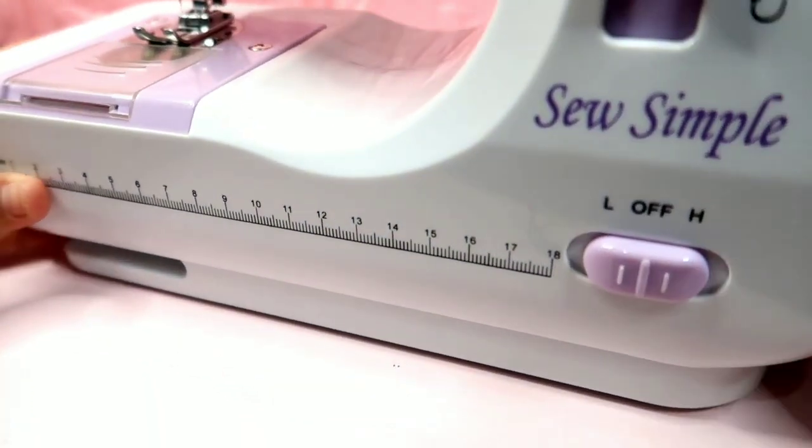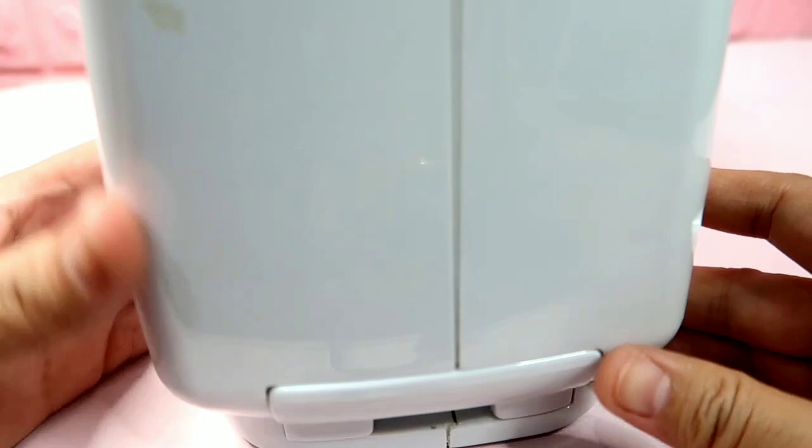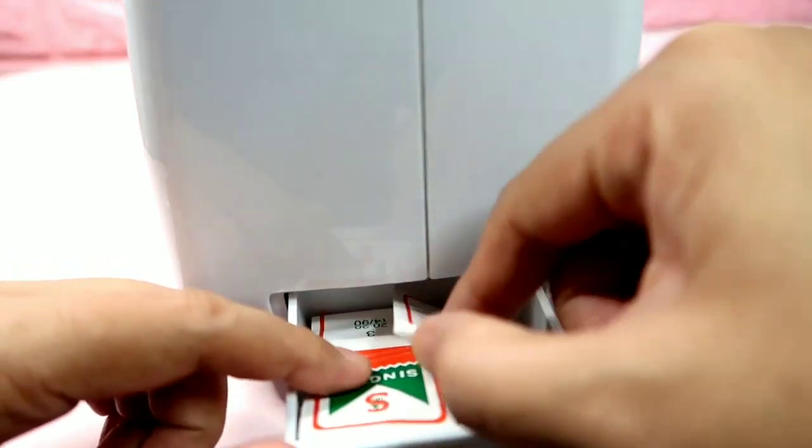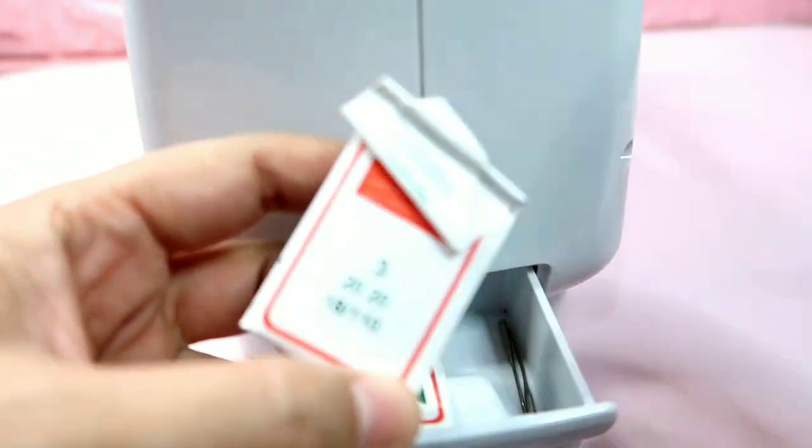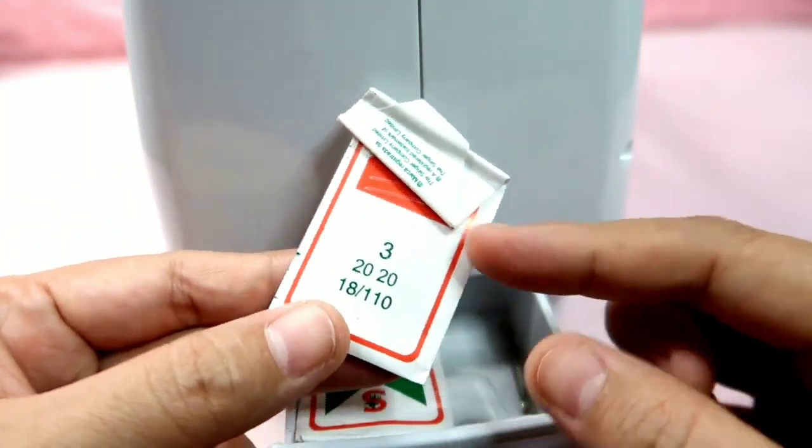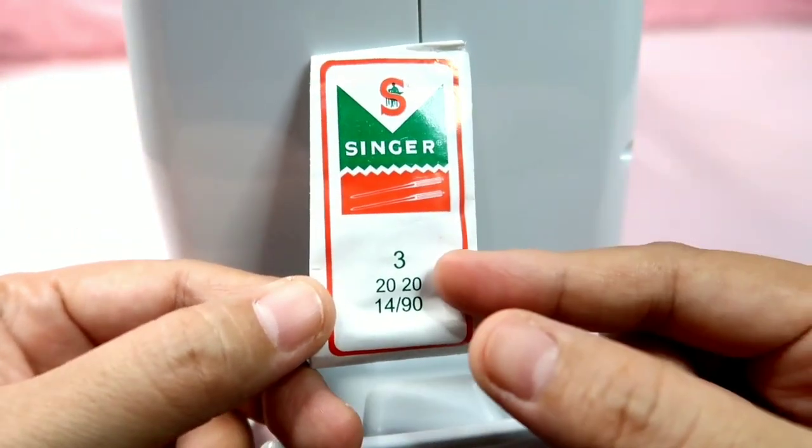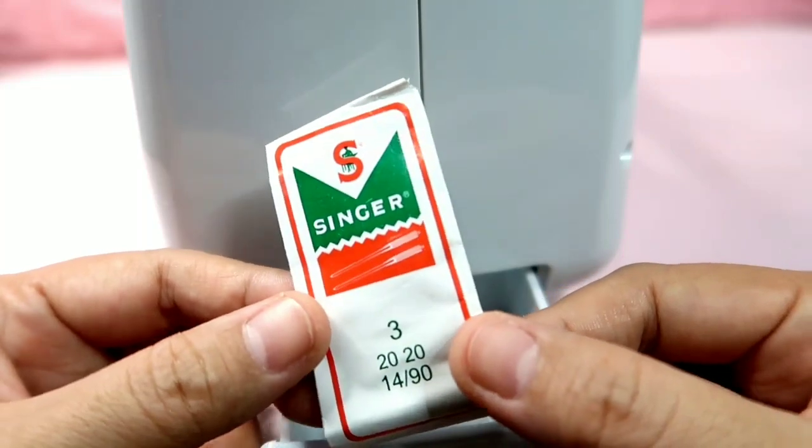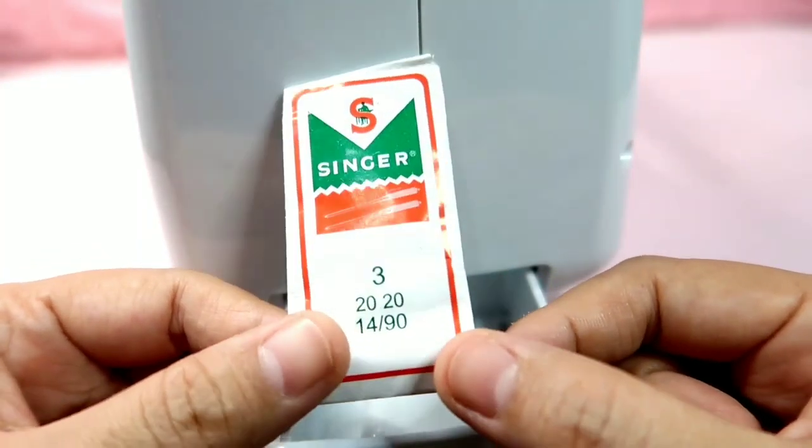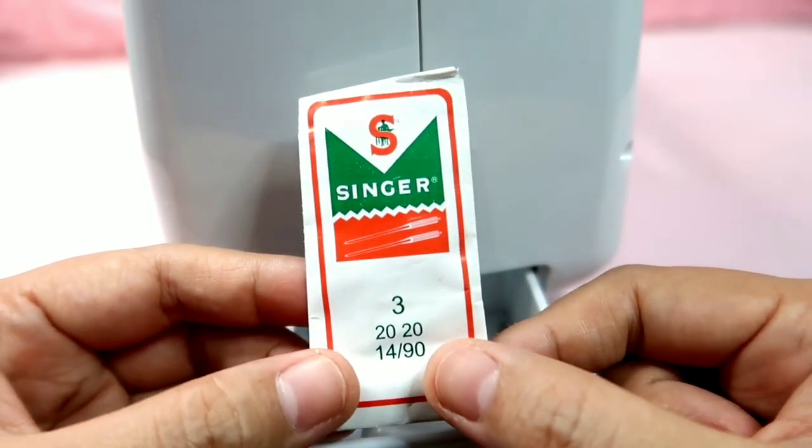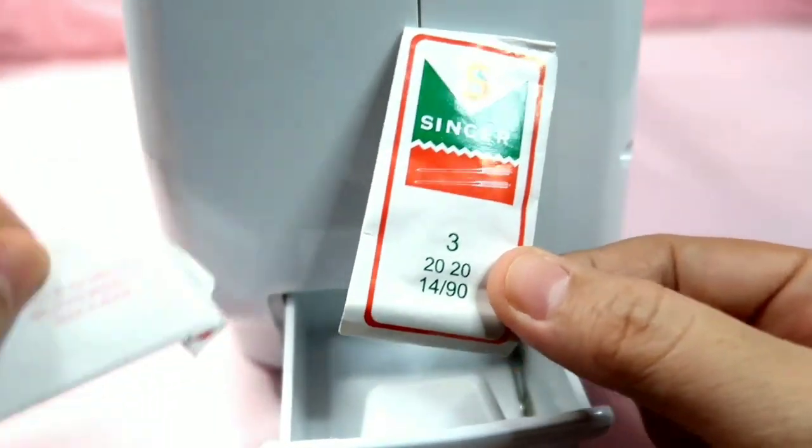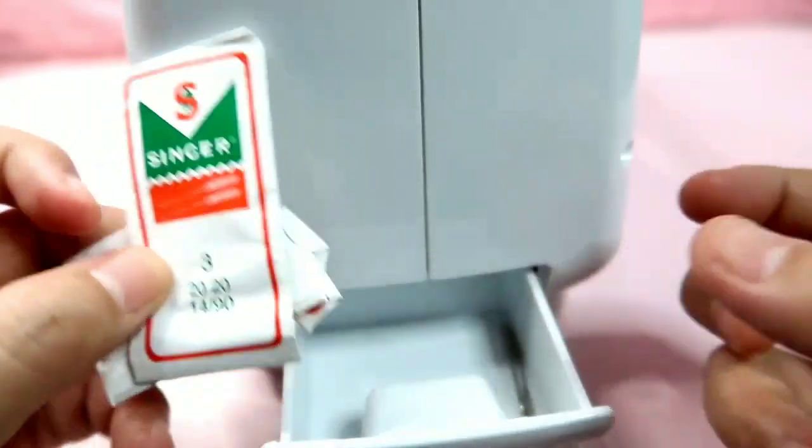It uses an AC DC adapter, or if you don't want that, you can use batteries. But I've never used batteries because if there's electricity, why use batteries, right? Now what I like about this Sew Simple is it has a side drawer where you can put small stuff like needles. This one I bought, but what really works with it is this 14/90 standard needle.